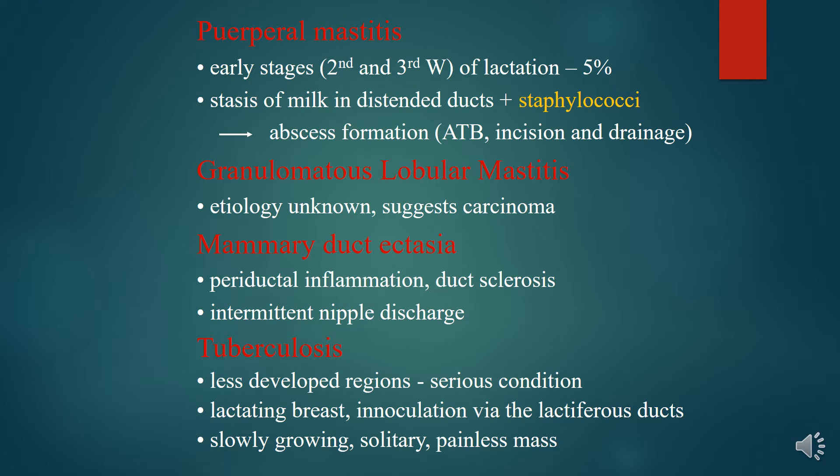Puerperal mastitis occurs in the early stages — the second or third week of lactation — in about five percent of cases, with stasis of milk in distended ducts and Staphylococcal infection. Granulomatous lobular mastitis has an unknown etiology; it may suggest carcinoma. Other inflammatory conditions include periductal inflammation, duct ectasia, duct sclerosis, and intermittent nipple discharge. Tuberculosis mastitis occurs in less developed regions.